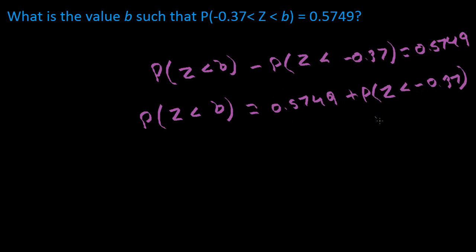If you use the standard normal probability table to find this probability right here, the probability of this being less than that, you would get a value of 0.3557.